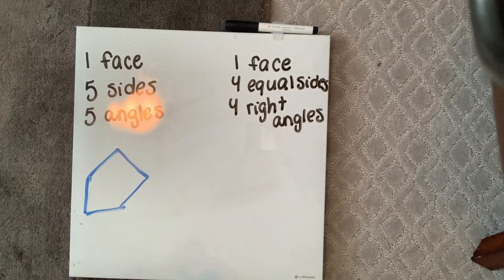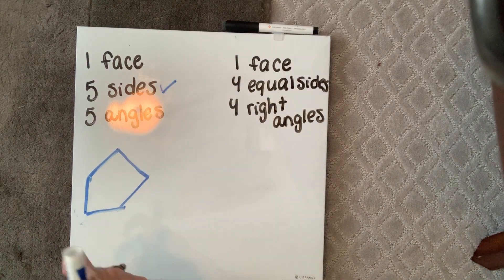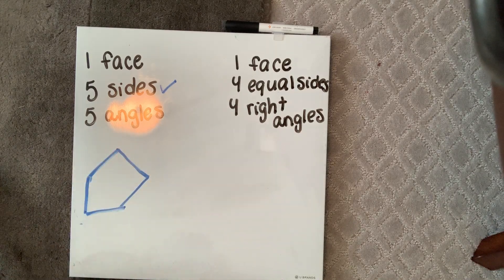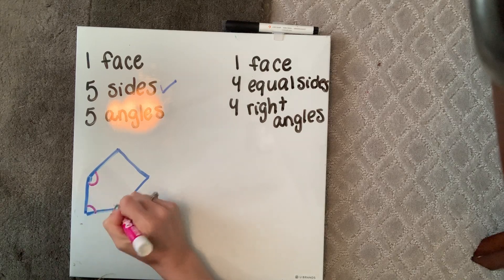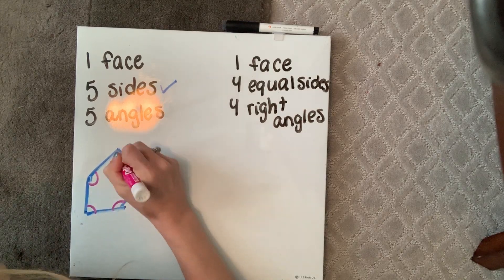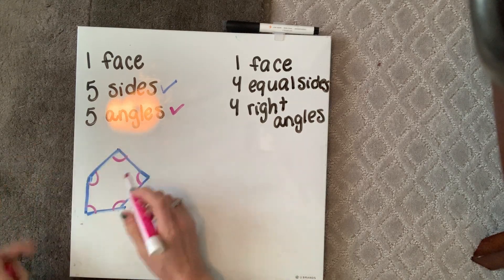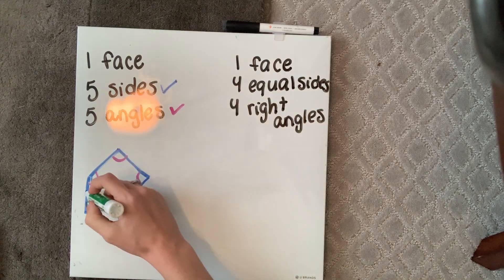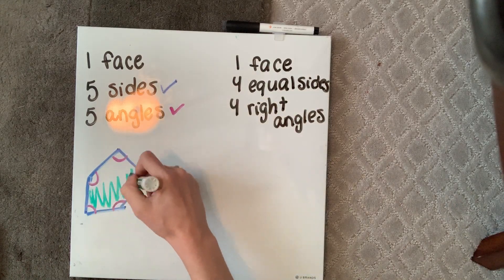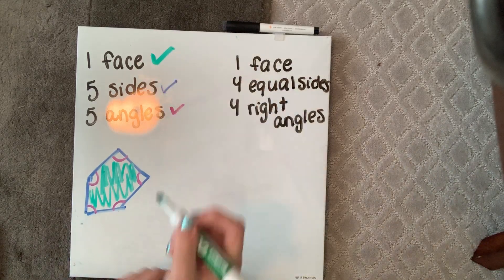So I drew my five sides. Let's make sure that they come together at five points or five angles: one, two, three, four, five. Remember, my angles are where those two lines connect. And one face — we know the face is what makes up the shape. So we correctly drew this shape.